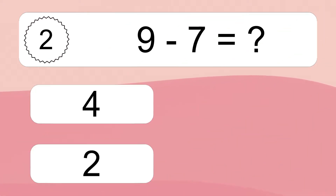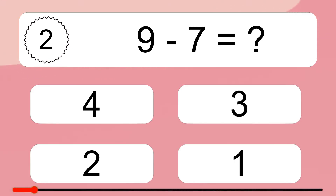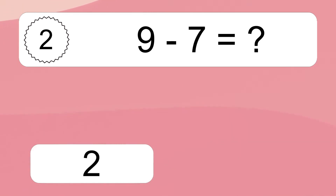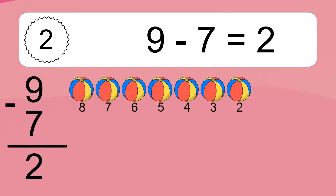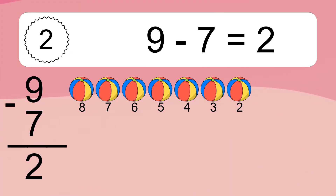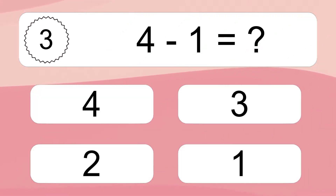9 minus 7 equals what? 9 minus 7 equals 2. Let's count it: 8, 7, 6, 5, 4, 3, 2.